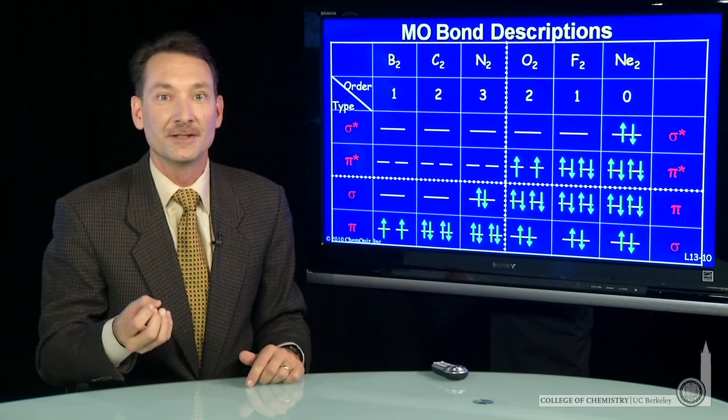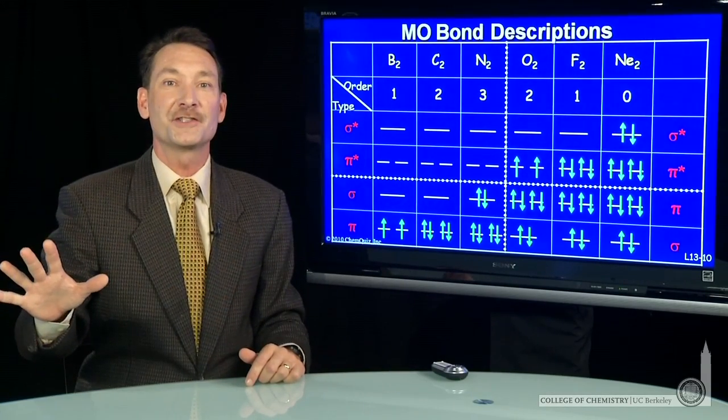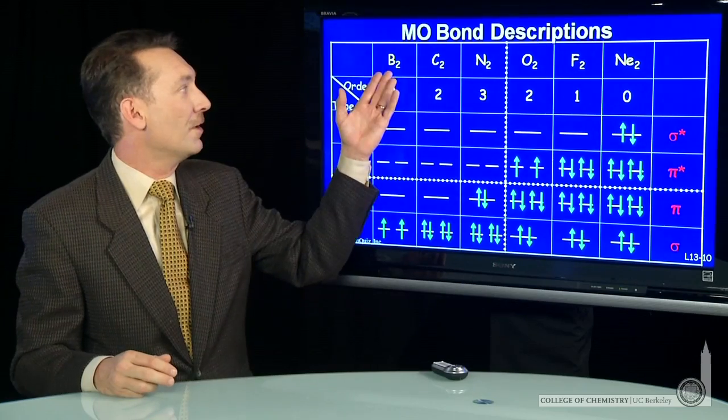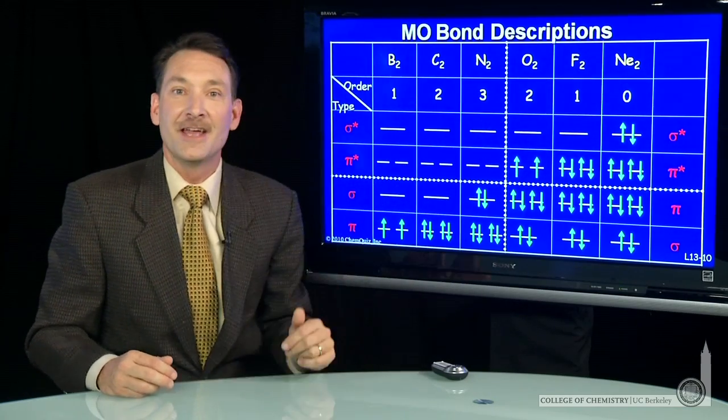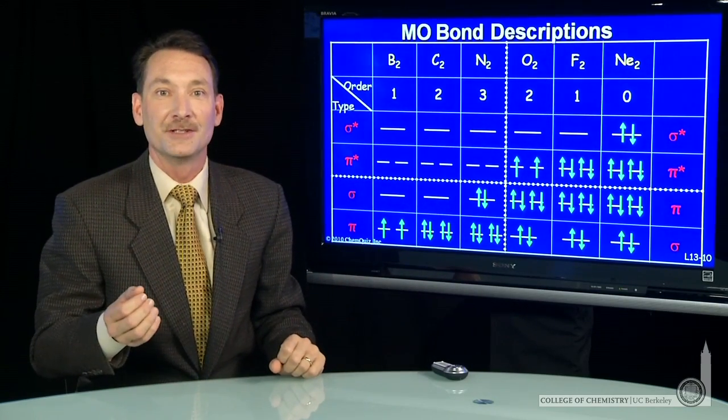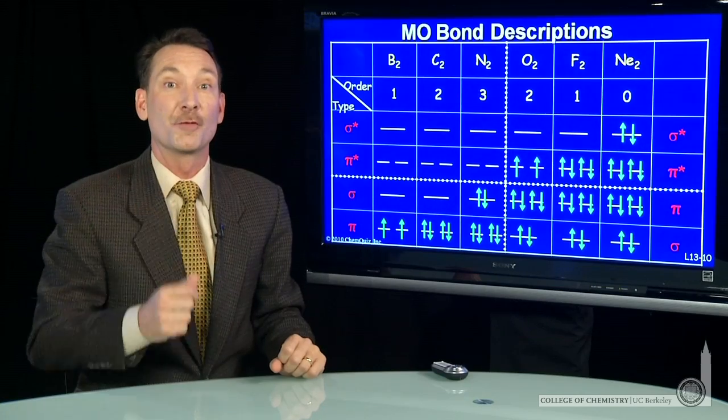Let's look at the molecular orbital description of several atoms going across the periodic table. We'll go from boron to neon and form the diatomic molecules and look at how they appear in a molecular orbital description.